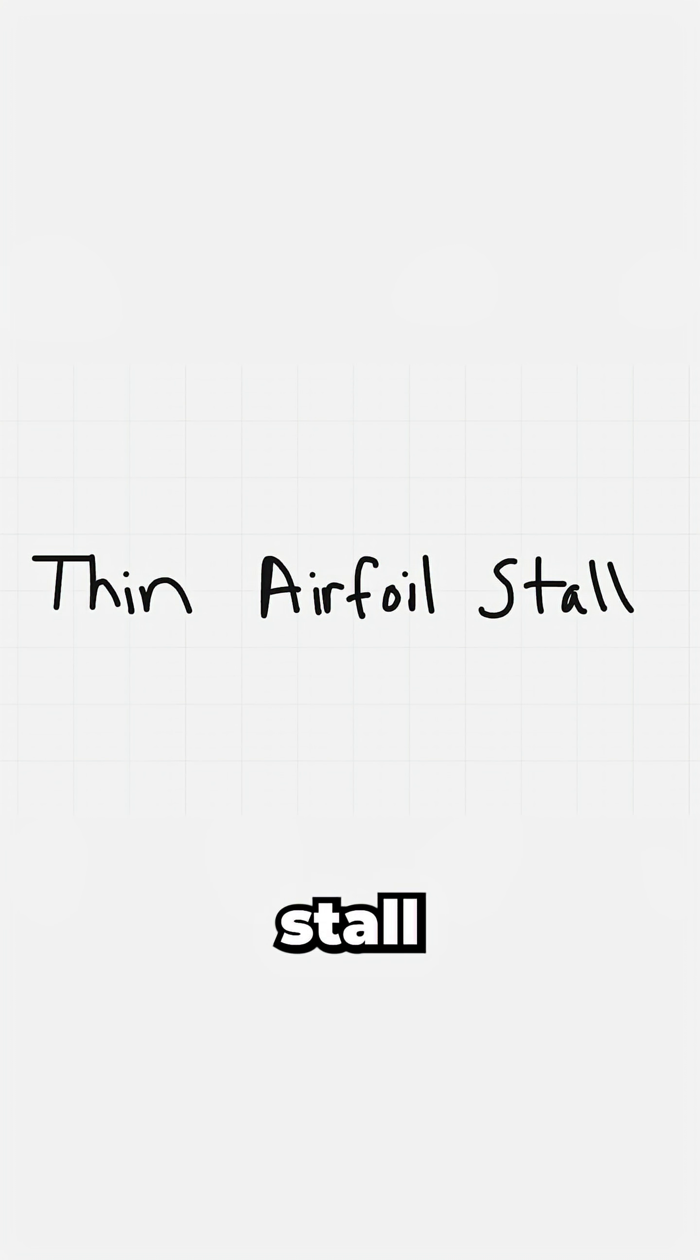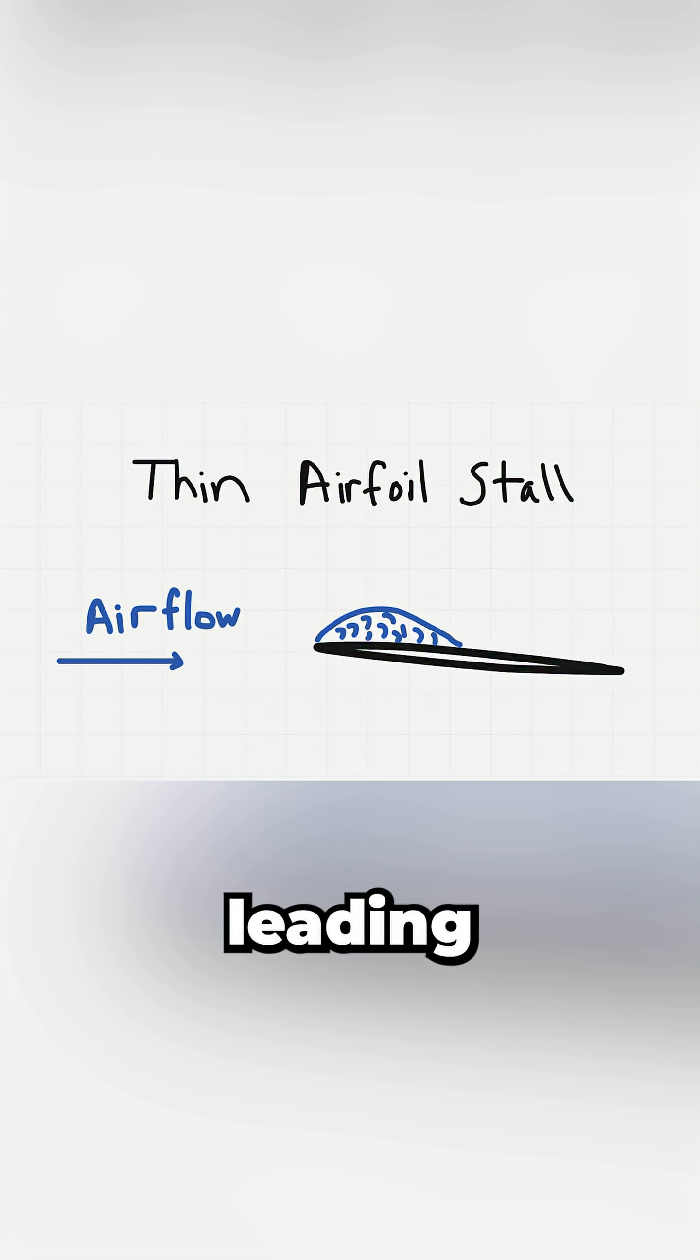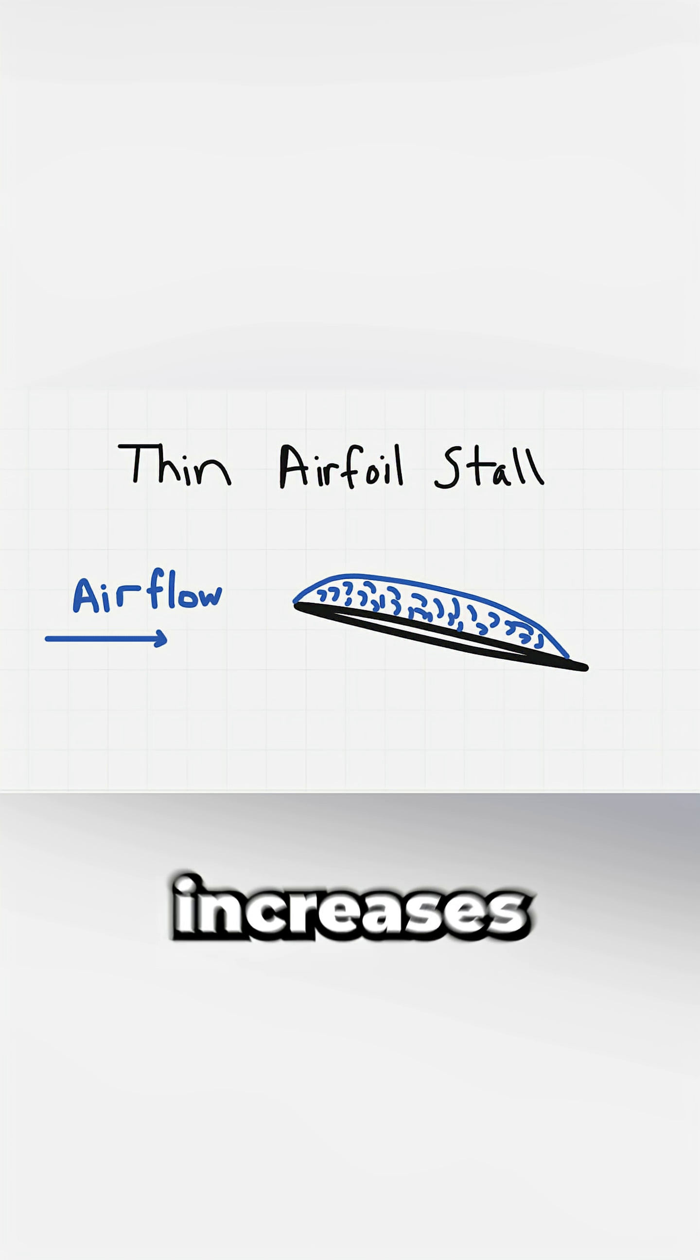The third is thin airfoil stall. Here, the stall also starts at the leading edge and reattaches further back. As the angle of attack increases, the bubble stretches toward the trailing edge.